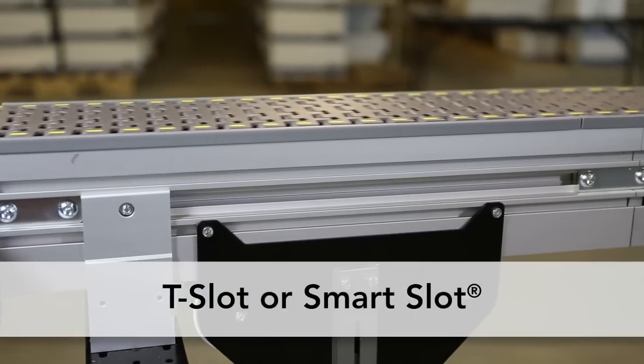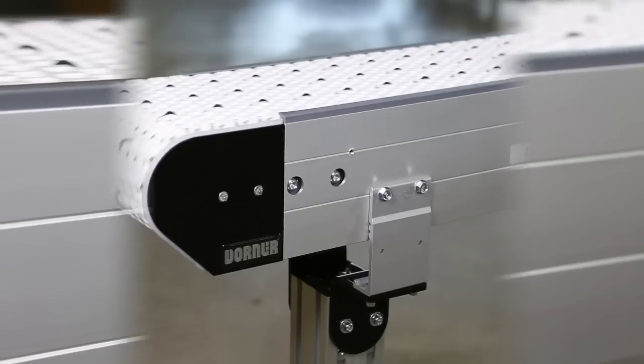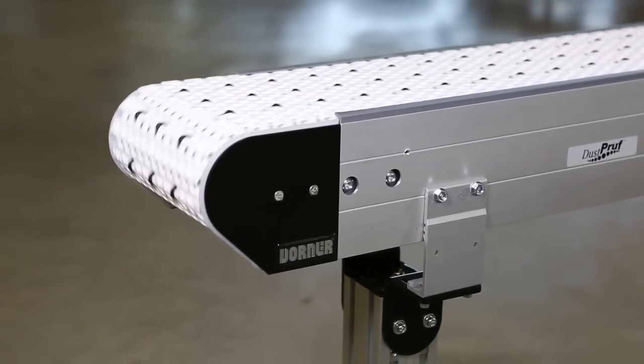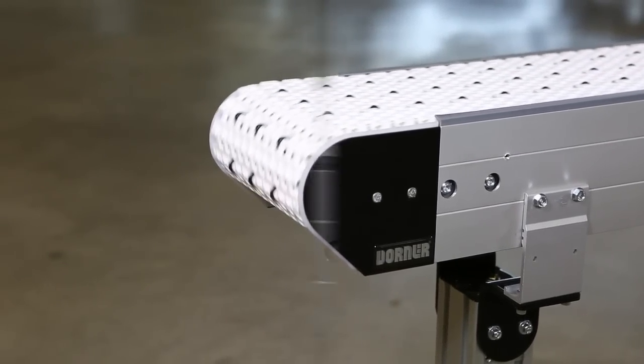Depending on your application, the conveyor is available in either a T-slot or Smart Slot dust-proof style frame. All bearings and components are located inside the conveyor frame, providing a flat-sided tail that can fit into tight spaces.